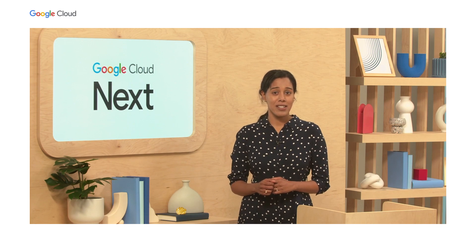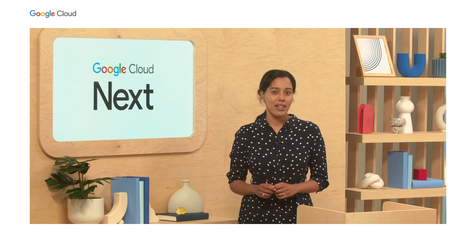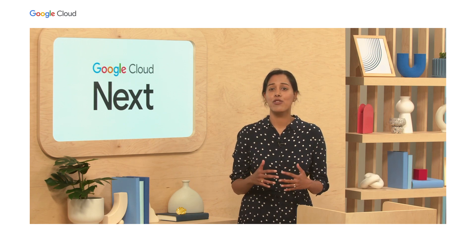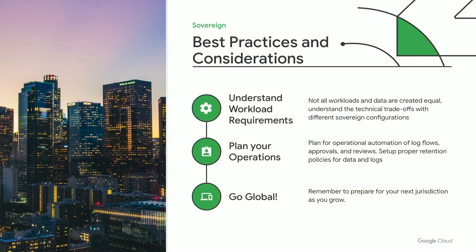Now that we've heard from our partners about how these solutions work in real life, let's look at some best practices to keep in mind when navigating your sovereign journey. First, one solution doesn't fit all workload needs — it's important to understand what is needed for your specific use case, your application, and the kind of data you want to bring to the cloud, which will prepare you to make the right trade-offs when choosing technology solutions. Second, think about how hands-on you want to be: understanding how you plan to manage operational complexity is key to deciding how to handle sovereignty and whether to work with a trusted third party. And lastly, think about your business needs for the future, which is important to understand the right path for your digital transformation journey.